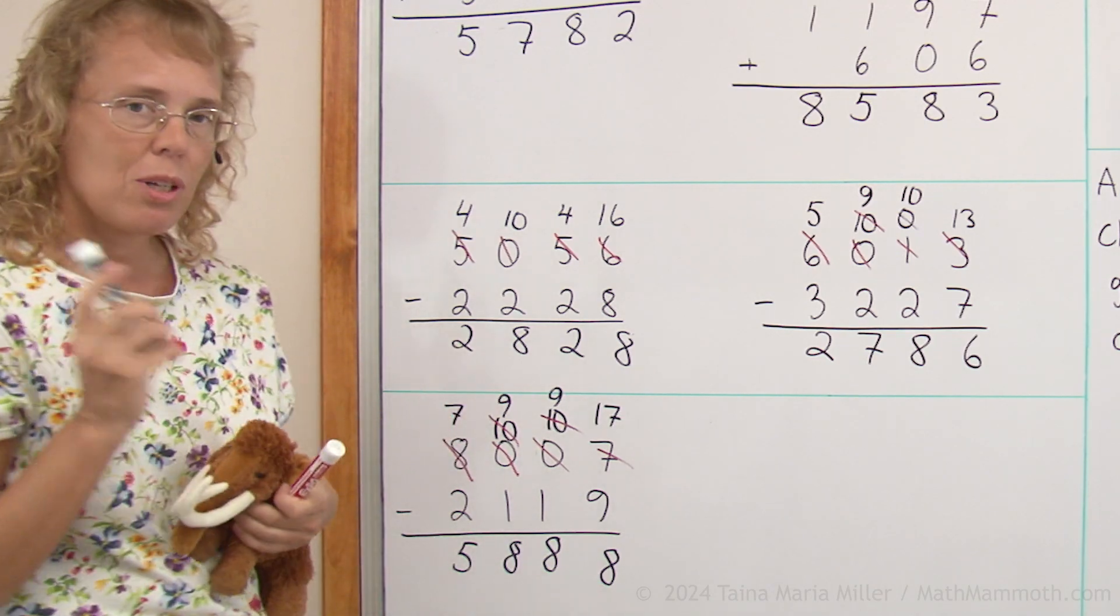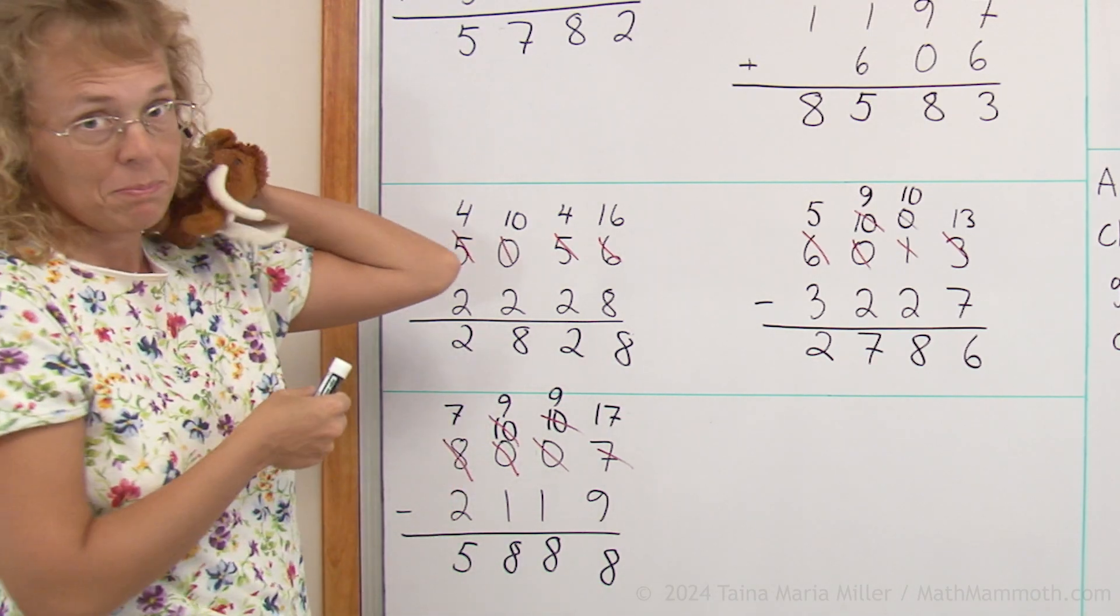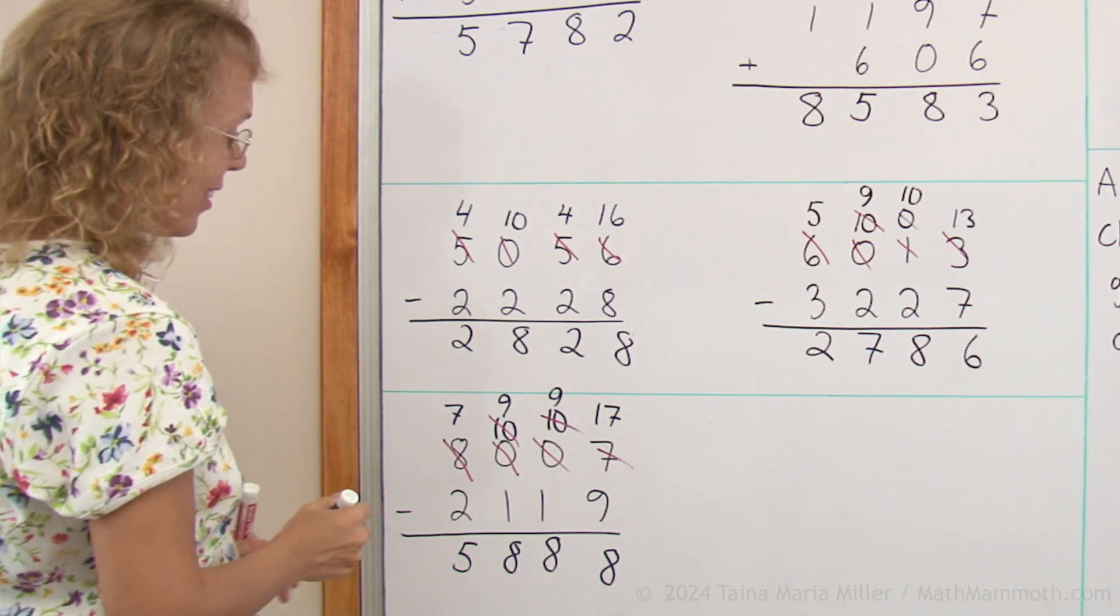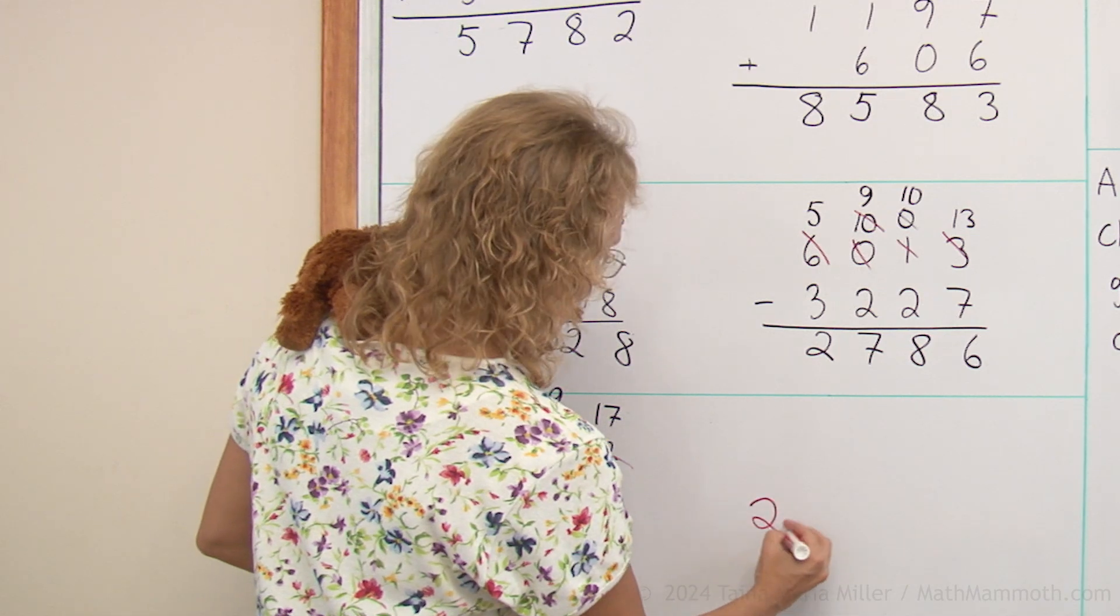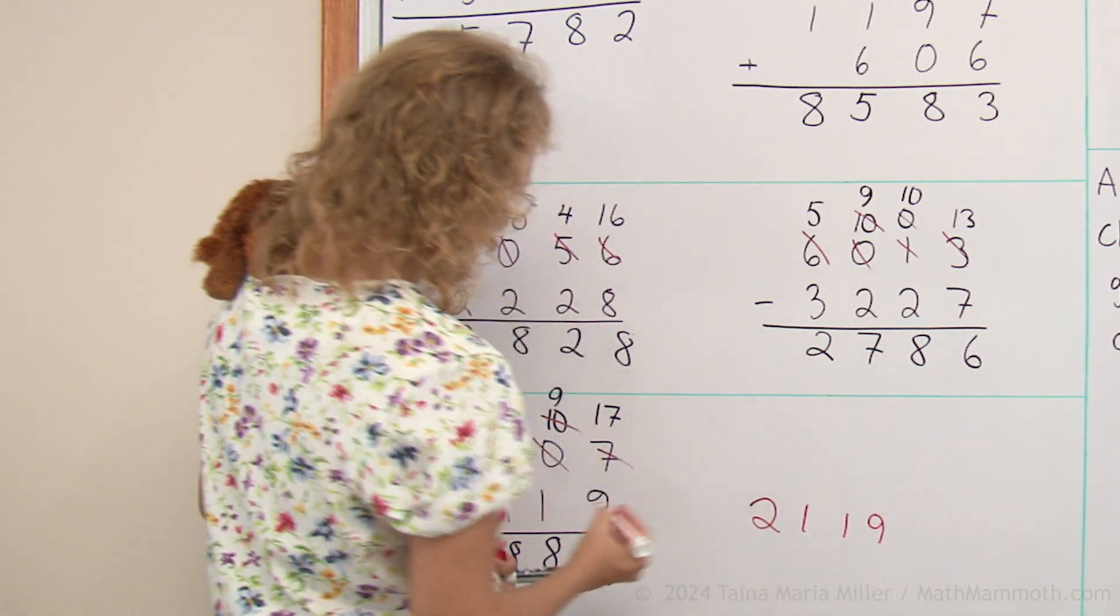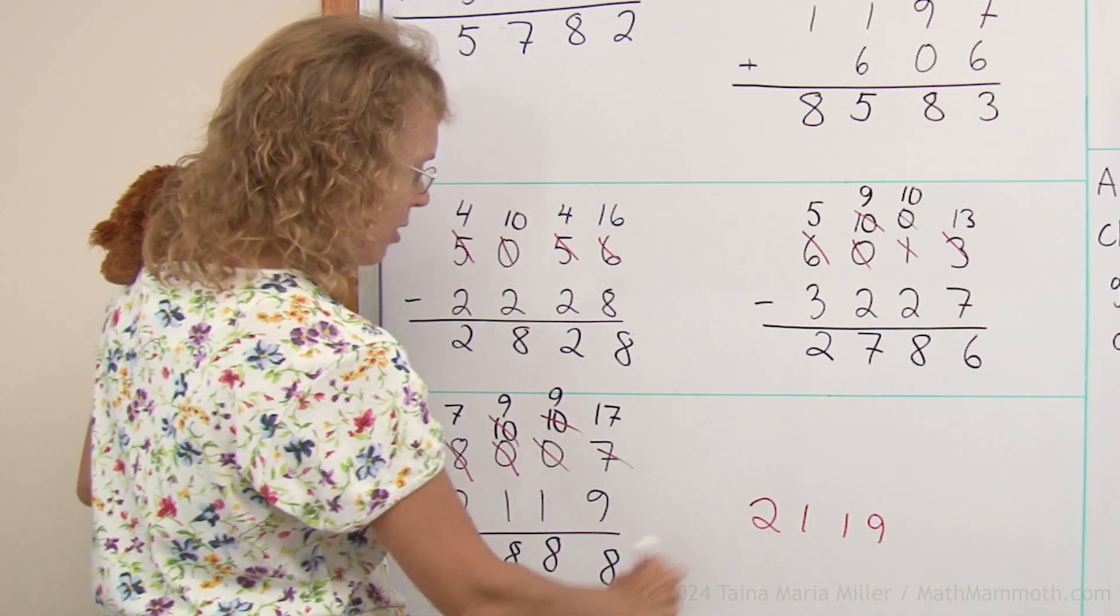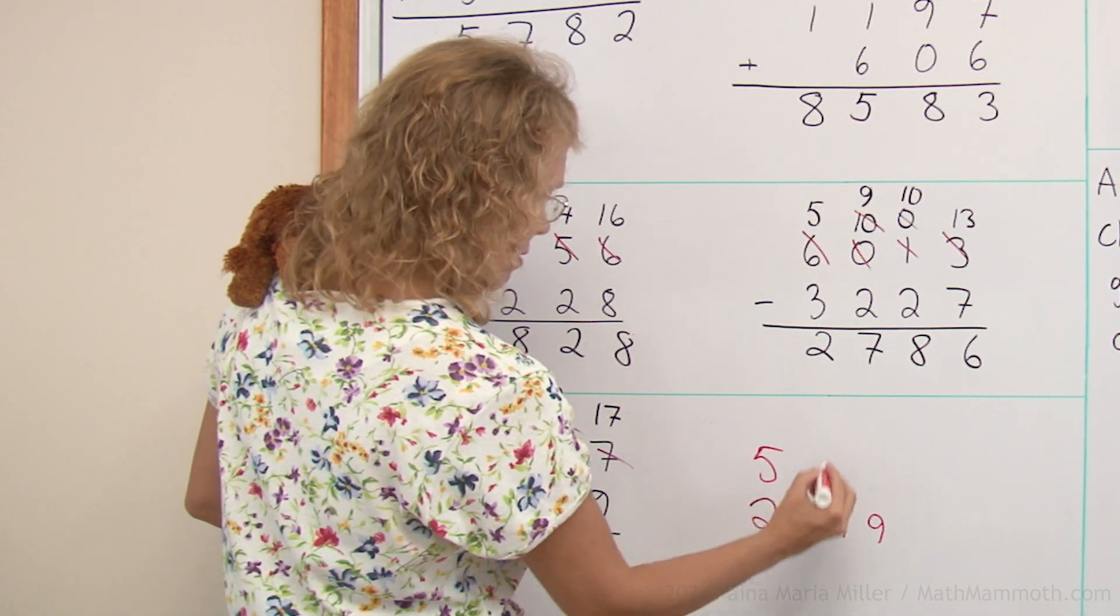Do you remember how to check subtractions? Of course, by adding. And you can copy this number over: two thousand, one hundred, nineteen. Then you can copy your answer over here on top, ready for adding.